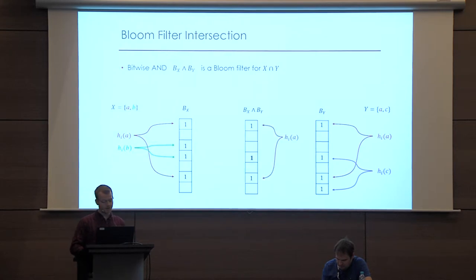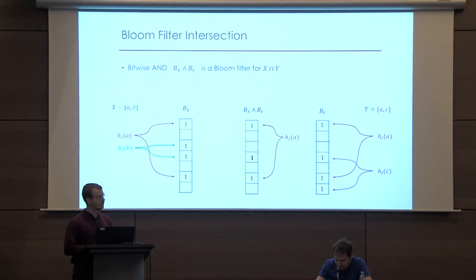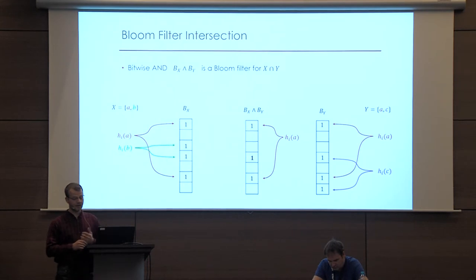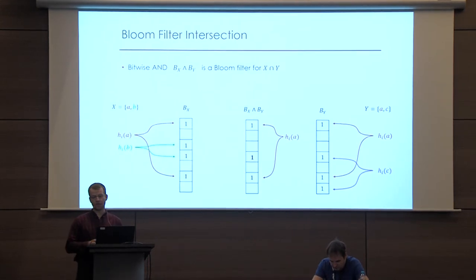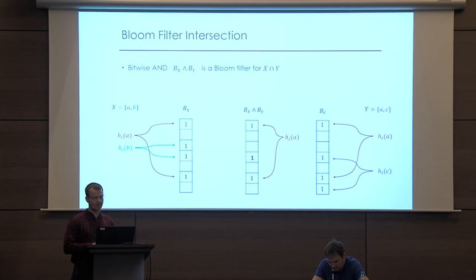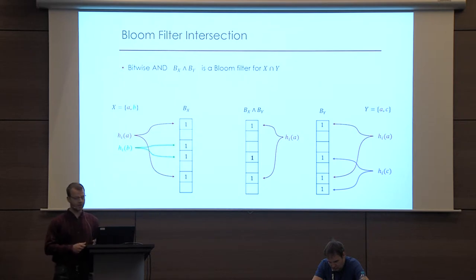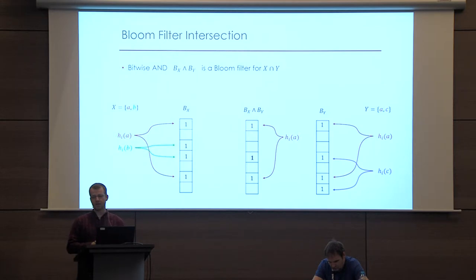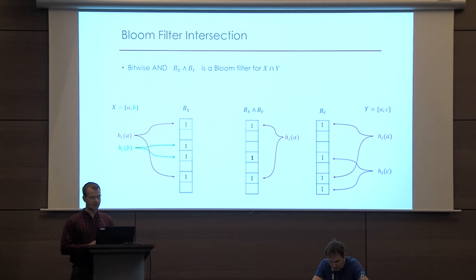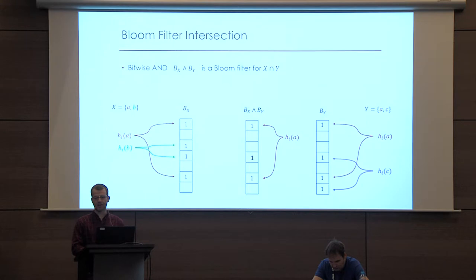We can just take the AND of two Bloom filters, and in fact A is the only item in the intersection, and we do still report A being in the bitwise AND. However, there's some additional information being leaked — particularly that bit in the middle, which randomly gets set to one. If you think about the simulation, the simulator only knows the intersection itself and wouldn't know which bit to additionally set. So this somehow inherently leaks more information than just the intersection itself.